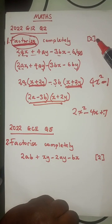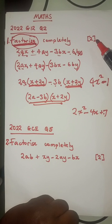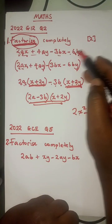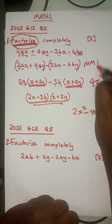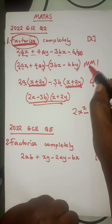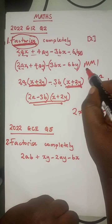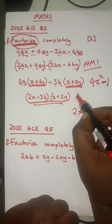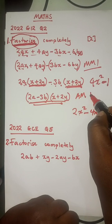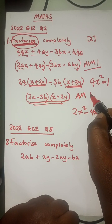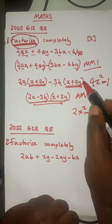Now look at the number of marks allocated — two marks. It means your method mark will attract one mark, and your final answer mark will also have one mark. I hope you have learned something here.